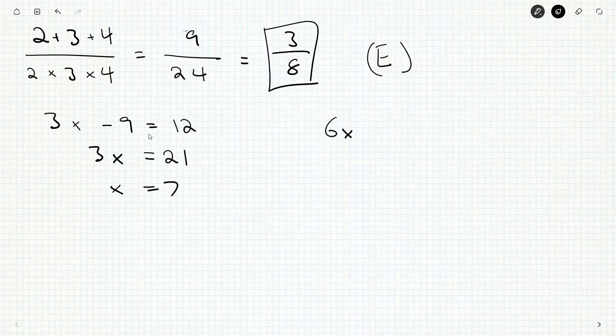And then, what are they asking for? They're asking for 6x. So that'll be 6 times 7, 42. And that's fine. That's a great way to do it.